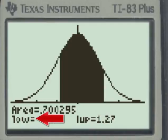The low is the lower number z-score, and the up, not lup, that thing that looks like an L is actually an extension of the y-axis. The upper number z-score is 1.27.